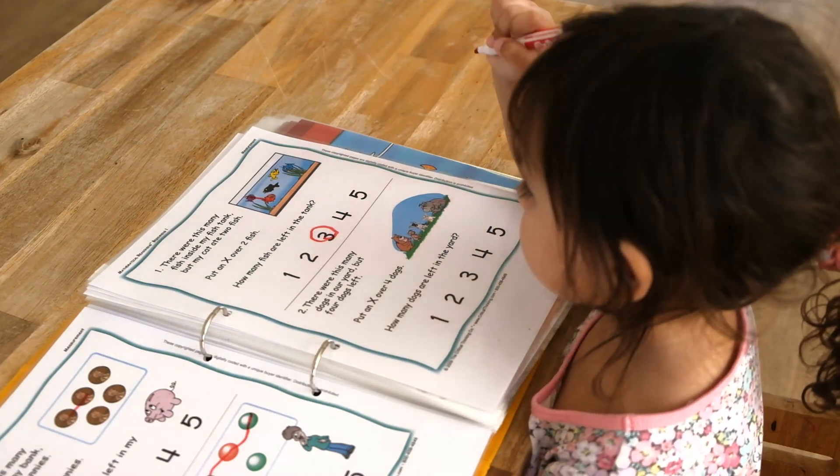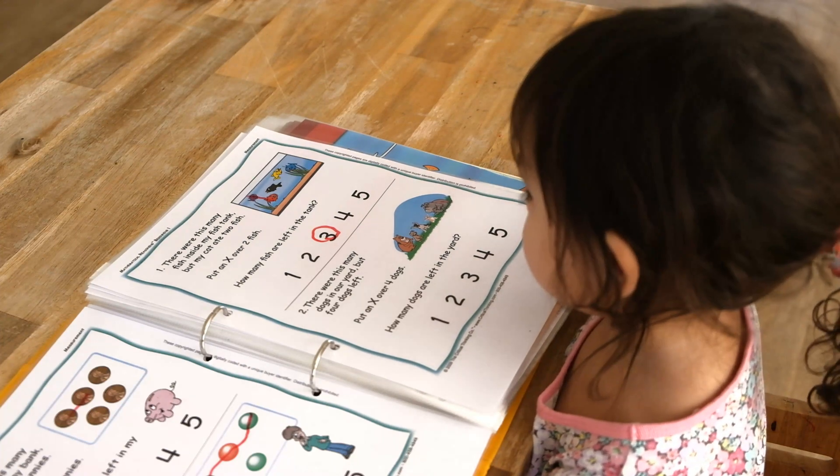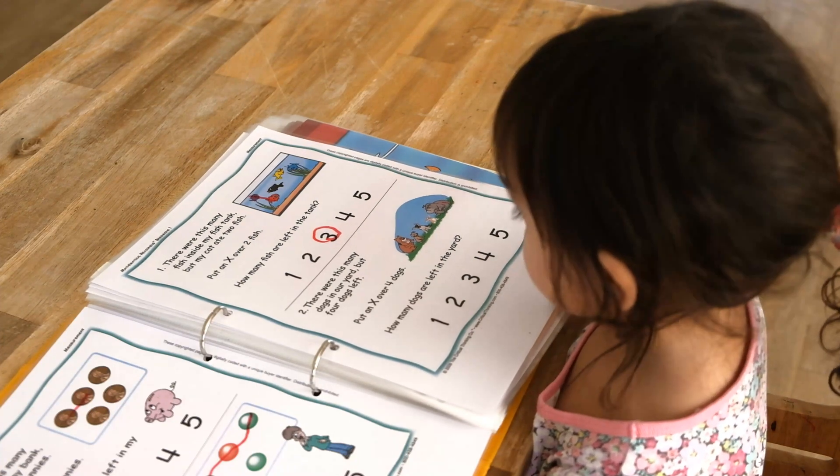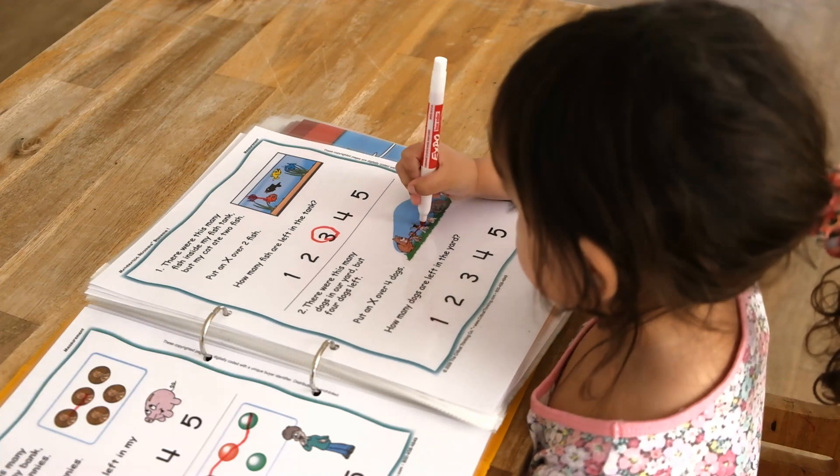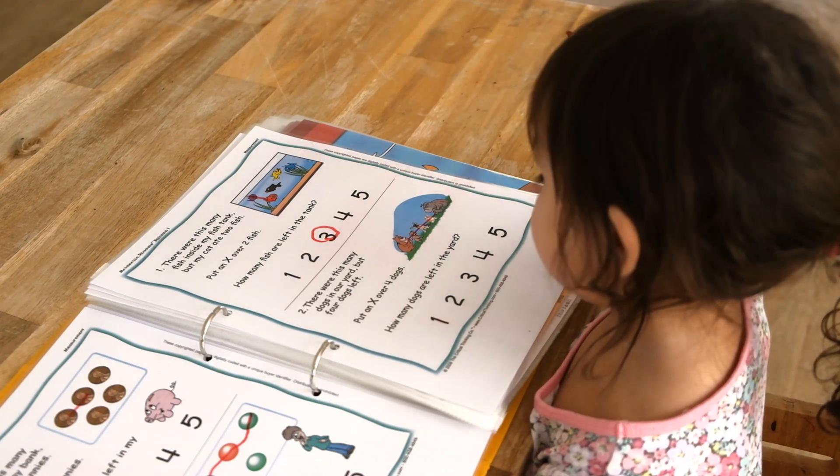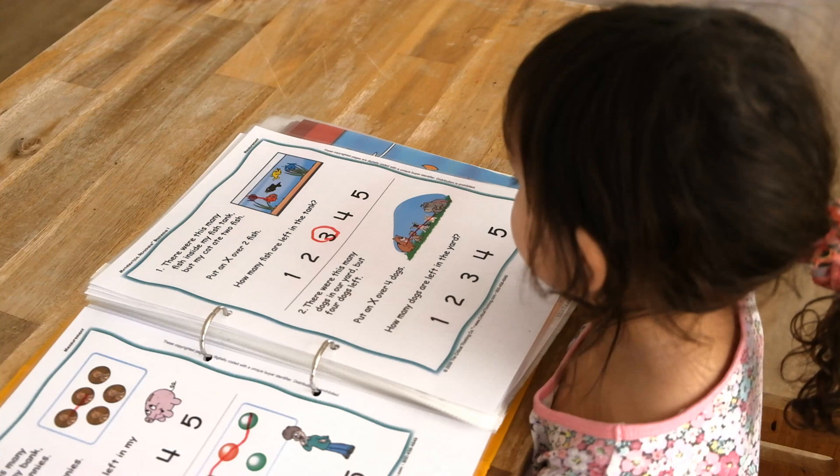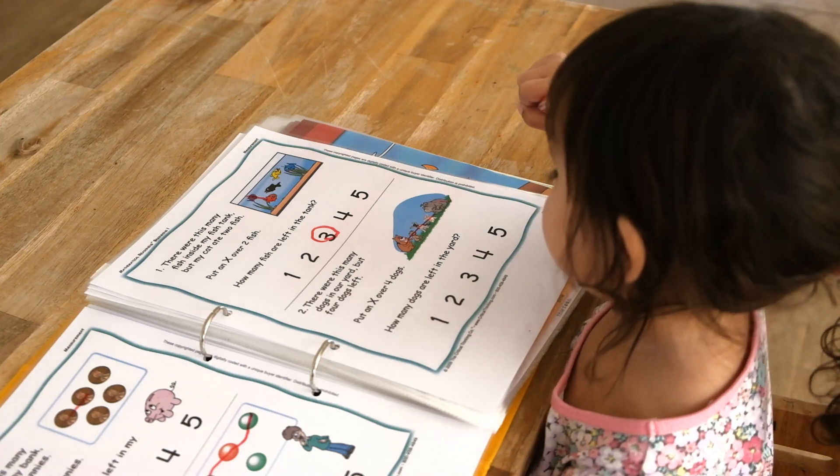There were this many dogs in our yard, but four dogs left. Can you cross out four dogs? How many dogs are left? That's right. Can you circle number one?